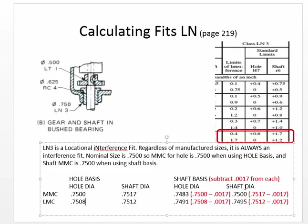Now, before we go over to SolidWorks to see how it can calculate these things for us, if you look up here, the ANSI class of fit is known as LN3 — Locational Interference 3. Underneath there, it shows under standard limits the ISO standard designation. The ISO standard designations have the same relationship, but they're labeled differently. The hole would be labeled uppercase H7, and the shaft lowercase R6.